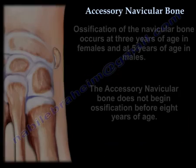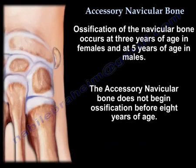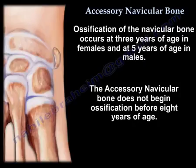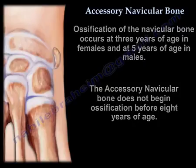The ossification of the navicular bone occurs at 3 years of age in females and at 5 years of age in males. The accessory navicular bone, on the other hand, does not begin ossification before 8 years of age.